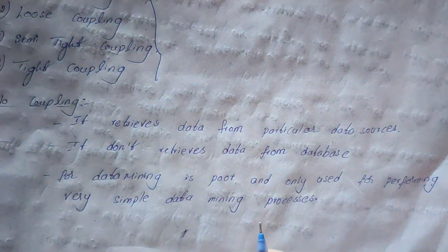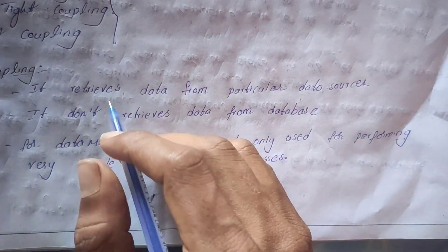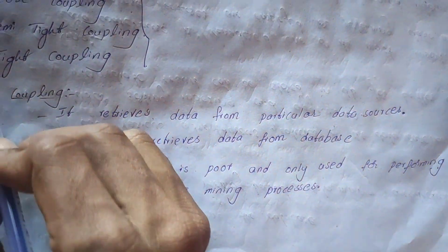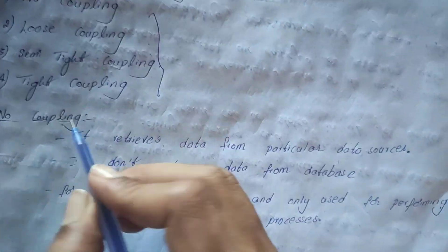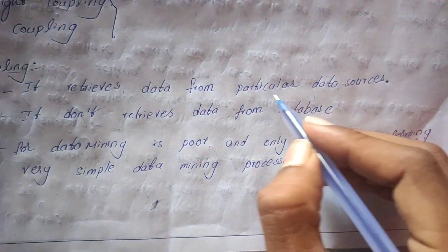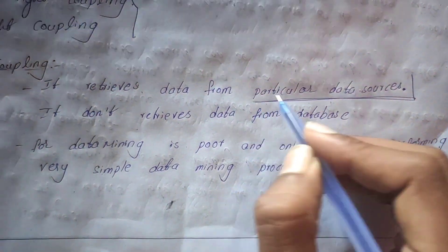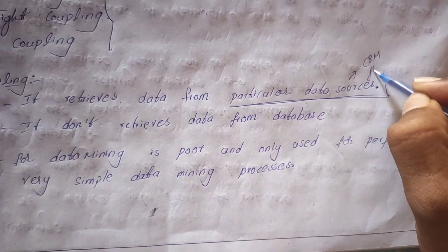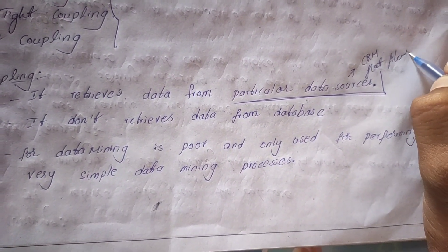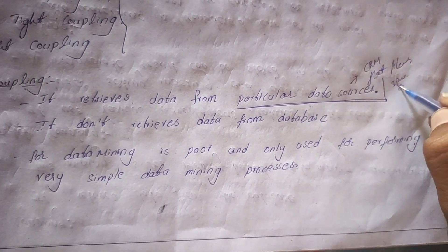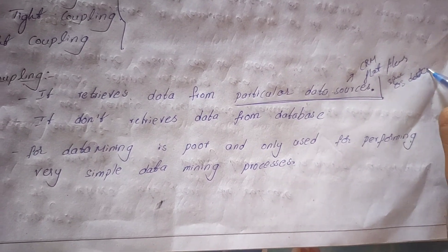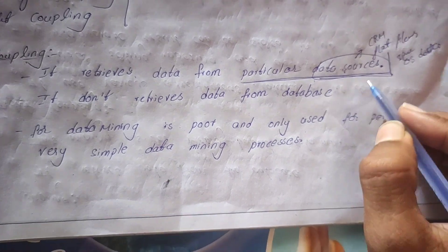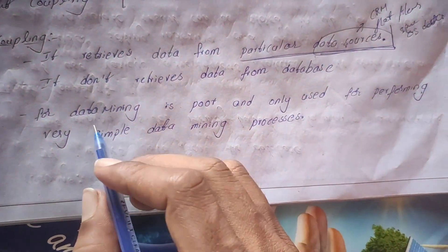In no coupling architecture, it retrieves data from particular data sources only, not from databases or data warehouses. Data sources here means CRM, flat files, spreadsheets, or OS data.